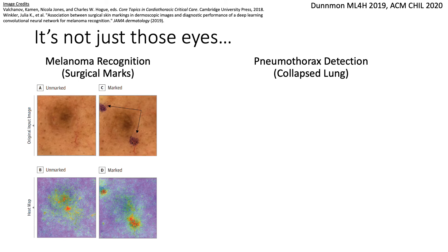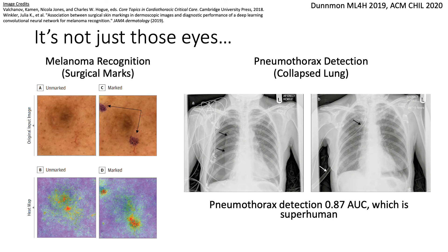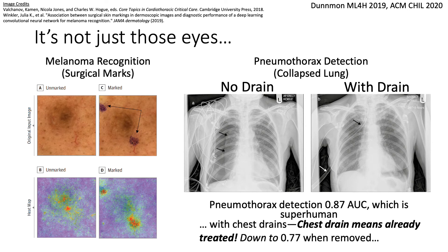Another example: many great teams looked at detecting a collapsed lung using AI. Machine learning results in the literature were superhuman, with an AUC of 0.87 — very exciting. But there's a problem. One of these images contains a small tube called a chest drain, which is used to treat a collapsed lung. The model might be cheating and just recognizing the drain. Almost a third of these images contain a chest drain, and those drains are very easy for a neural net to spot. If you remove those images with drains, the AUC drops to 0.77 — worse than a first-year resident. It's a dramatic drop, suggesting the model was obtaining high quality by cheating.